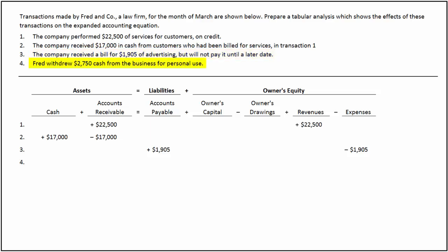In the last transaction, Fred withdrew $2,750 of cash from the business. This transaction decreases cash, which in turn decreases assets, by $2,750. It also increases owner's drawings, which in turn decreases owner's equity by $2,750.